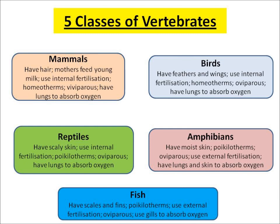The last category is fish. Fish have scales and fins. They are cold-blooded — they are poikilotherms. They use external fertilization too, and they lay eggs, so they are oviparous. Fish use gills to absorb oxygen, because they live in the water.